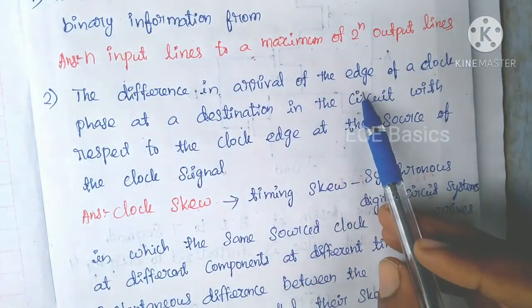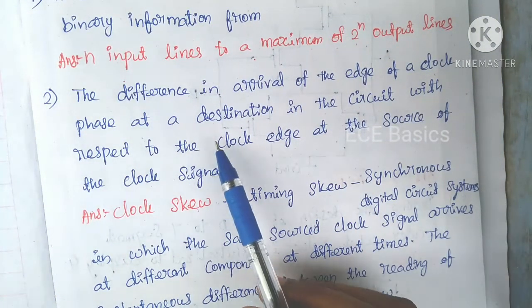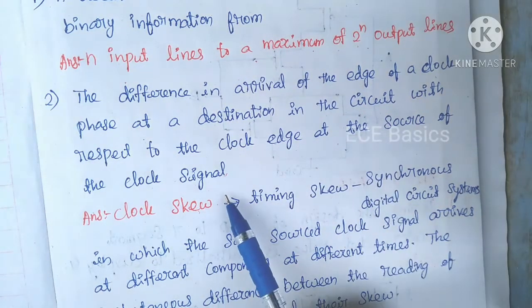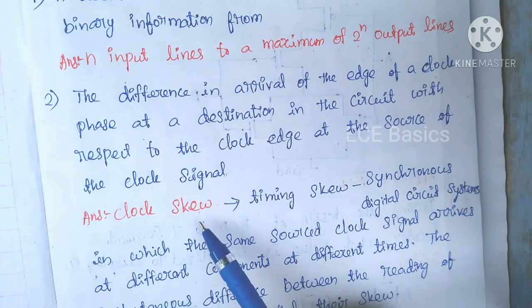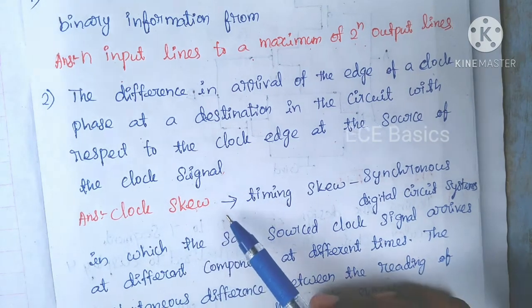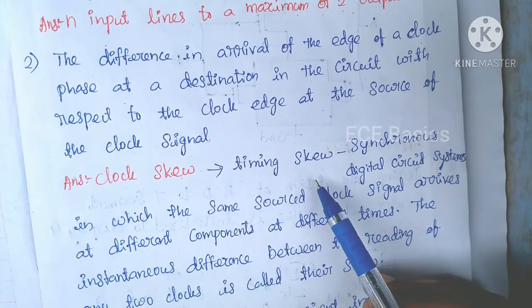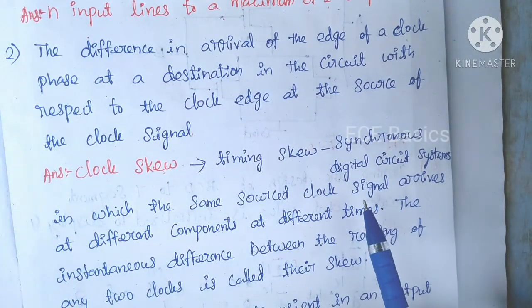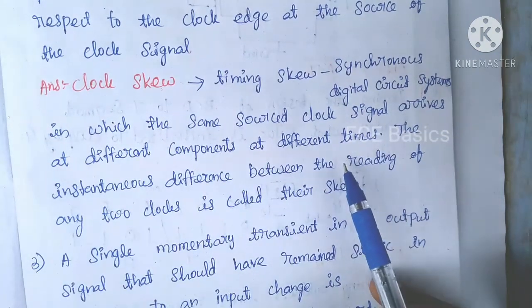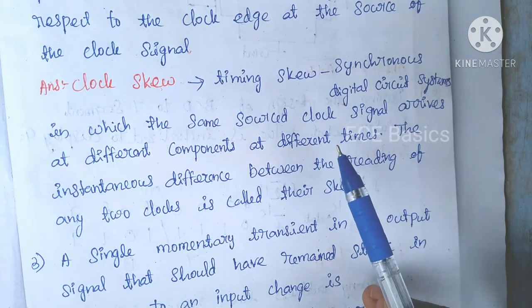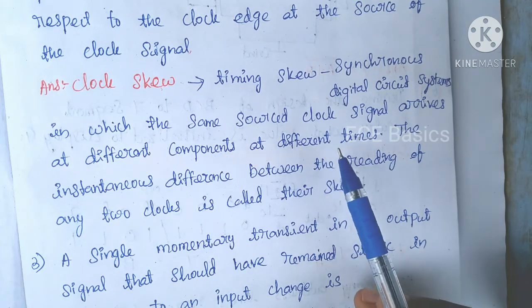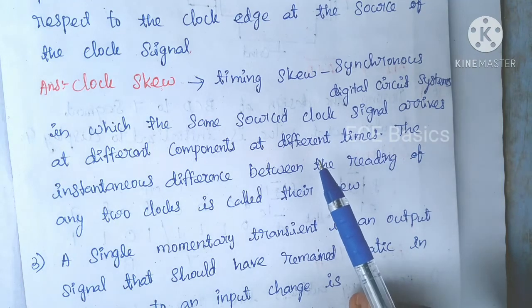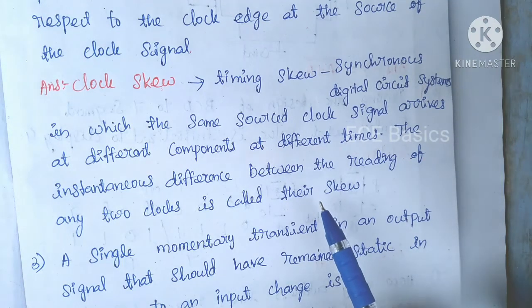Next question: The difference in arrival of the edge of your clock phase at a destination in the circuit with respect to the clock edge at the source of the clock signal — this is the definition of clock skew. The answer is clock skew, also called timing skew. This is from the topic of synchronous digital circuit systems. The same clock signal arrives at different components at different times, and that reading difference is called skew.